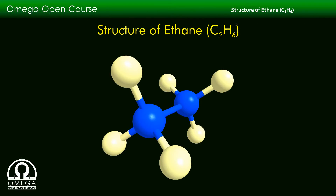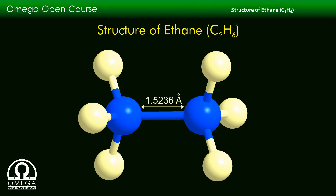The distance between the two carbon atoms is 1.5236 angstrom. The carbon-hydrogen bond length is the same as that in methane, i.e. 1.113 angstrom.